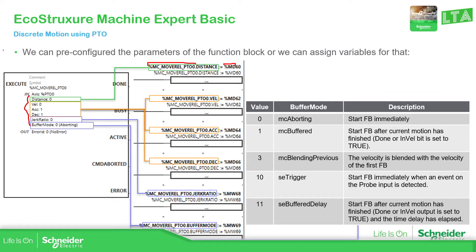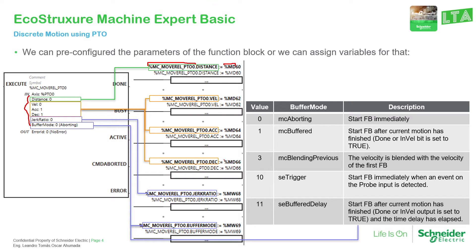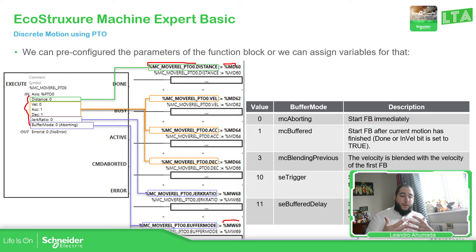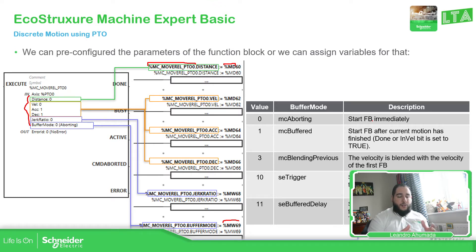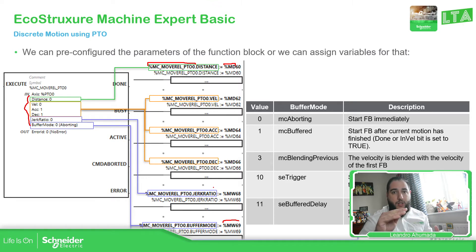There is something important here that you need to know: the buffer mode. The buffer mode depends on the previous movement you have and how it's going to affect the new one. For example, if you are using MC Aborting — the value is zero, MW zero — then as soon as you execute this movement, it's going to abort the previous one. You need to be careful about the motion you want for the axis, because if you don't pay attention to the buffer mode, the real movement may not be what you expected. We also have the jerk ratio, which relates to the acceleration — how you want the velocity to reach each point.